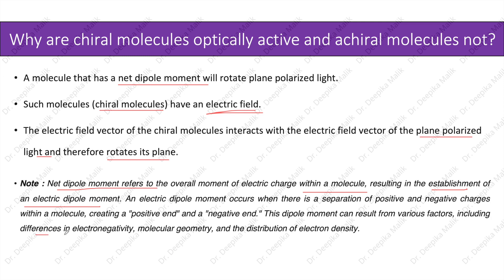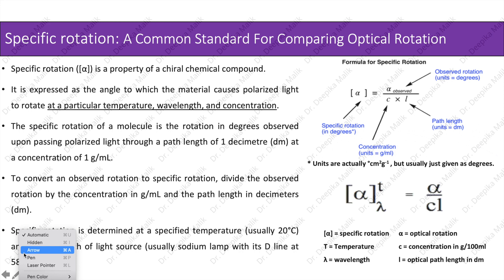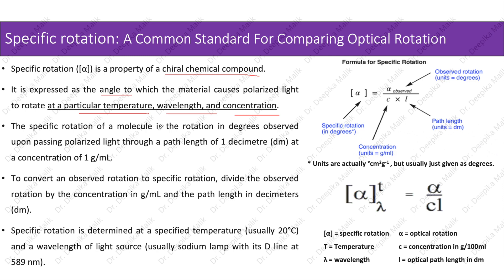Specific rotation is a common standard for comparing optical rotation. It is a property of a chiral chemical compound, expressed as the angle to which the material causes polarized light to rotate at a particular temperature, wavelength, and concentration. The specific rotation is the rotation in degrees observed upon passing polarized light through a path length of one decimeter at a concentration of one gram per milliliter. To convert an observed rotation to specific rotation, divide the observed rotation by the concentration in grams per milliliter and the path length in decimeters.